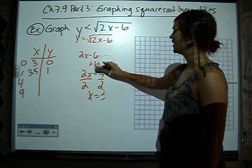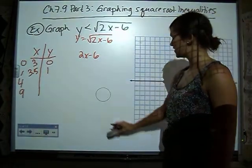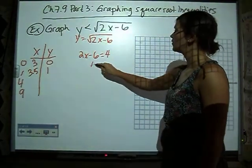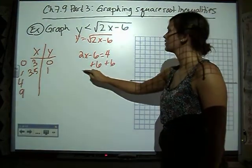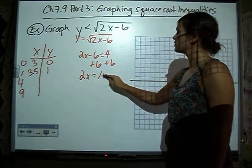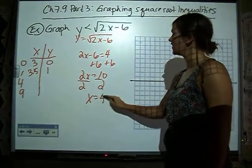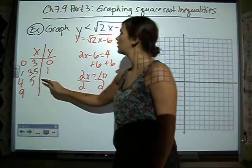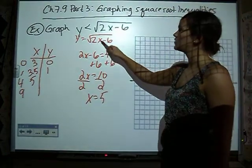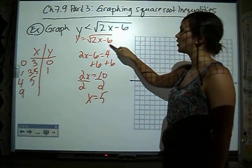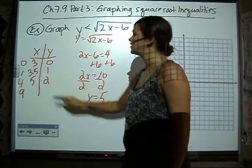Now, if we let 2x minus 6 equal 4, we're going to add 6, 2x equals 10, divide by 2, x equals 5. When we put 5 in, 2 times 5 is 10, minus 6 is 4, square root of 4 is 2.